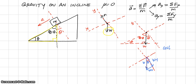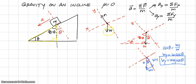I can find the y-component and x-component using sine and cosine. Cosine of theta equals adjacent over hypotenuse, so the weight component in the y-direction equals the weight times cosine of theta — also written as mg cosine theta. Sine of theta equals opposite over hypotenuse, so the weight component in the x-direction — the component of gravity parallel to the incline — equals w sine theta, also written as mg sine theta.